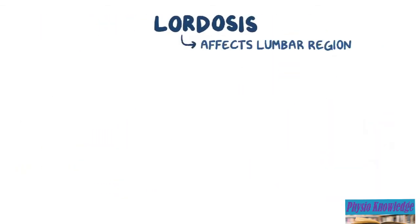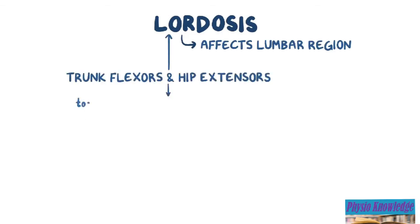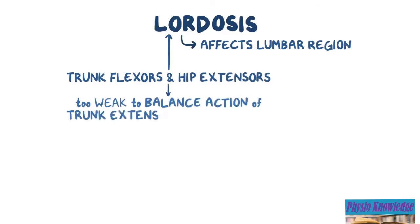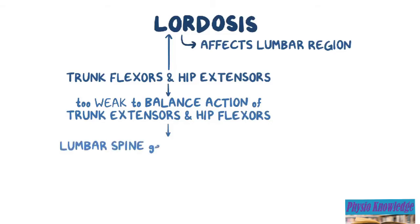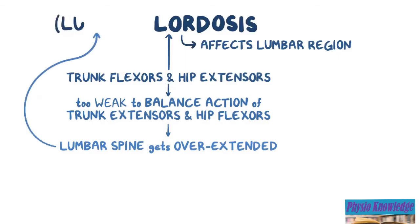Lumbar lordosis typically affects the lumbar region, and can specifically result from the trunk flexors and the hip extensors becoming too weak to balance the action of trunk extensors and hip flexors. When that happens, the lumbar spine gets overextended, causing it to progressively curve inwards, causing lumbar lordosis.